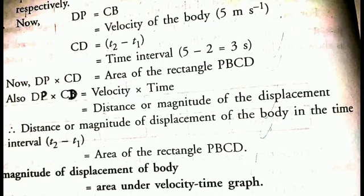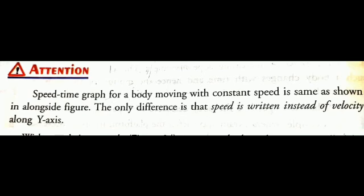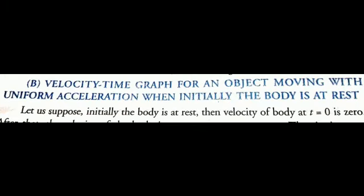Therefore, the magnitude of displacement of the body is equal to the area under the velocity-time graph. At this point, we must keep in mind that the speed-time graph for a body moving with constant speed is the same as shown in figure 23. The only difference is that speed is written instead of velocity along the y-axis.